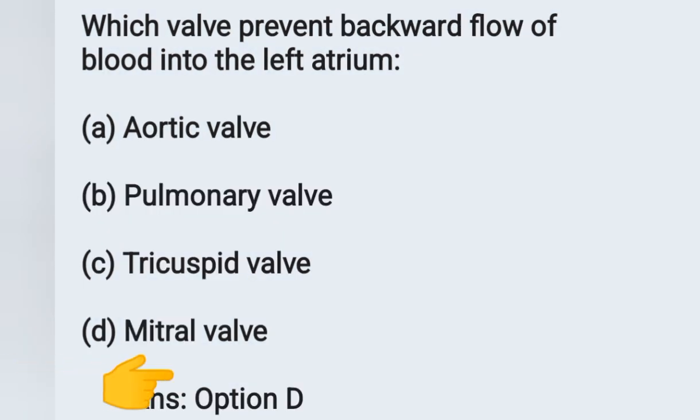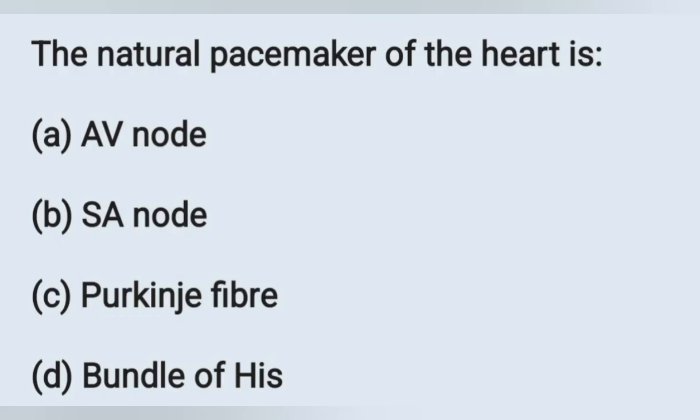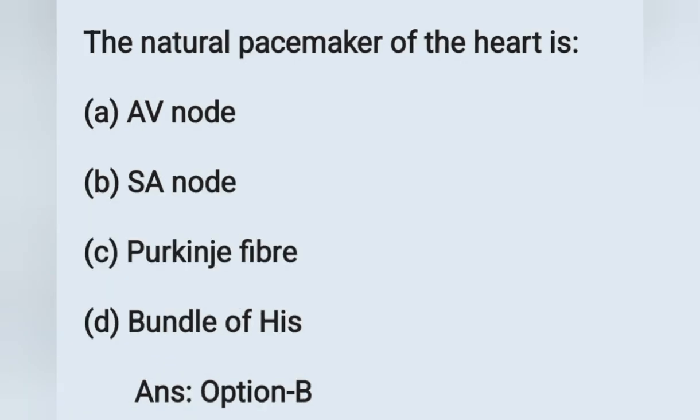Next question: the natural pacemaker of the heart is which structure? Options: (a) AV node, (b) SA node, (c) Purkinje fibers, (d) bundle of His. The natural pacemaker of the heart is the sinoatrial node, or SA node. Option B is the correct answer.